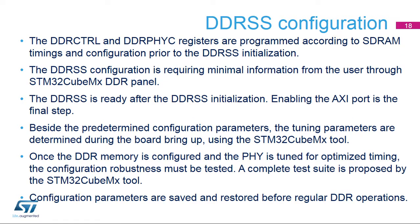The DDRCTRL and DDRPHYC registers are programmed according to SDRAM timings and configuration prior to DDRSS initialization. The DDRSS configuration requires minimal information from the user through the STM32CubeMX DDR panel. The DDRSS is ready after initialization, and enabling the AXI port is the final step. Besides the predetermined configuration parameters, tuning parameters are determined during board bring-up using the STM32CubeMX tool. Once the DDR memory is configured and the PHY is tuned for optimized timing, the configuration robustness must be tested using the complete test suite proposed by STM32CubeMX. Configuration parameters are saved and restored before regular DDR operations.